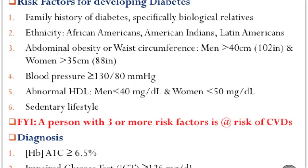As for gestational diabetes, it occurs in pregnant women as a result of intolerance to glucose, culminating from hormonal changes as a result of their condition. In some individuals, this diabetes resolves after birth, but in some it can lead to a lifetime of diabetes, which is normally type 2 diabetes.